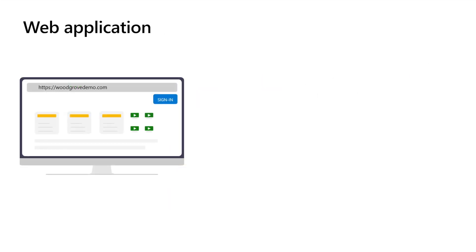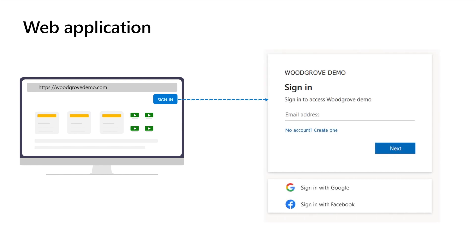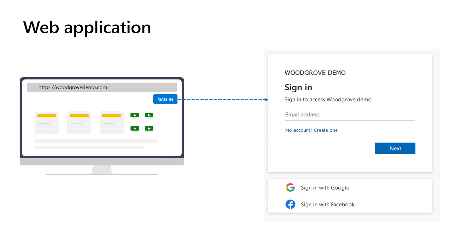Web apps run on web servers like Azure Web Apps, IIS, or Apache HTTP Server, and users access them through a web browser. When it comes to signing in, users will be redirected to the Microsoft Entra External ID sign-in page. Once users successfully authenticate, they will be taken back to the application with a security token.